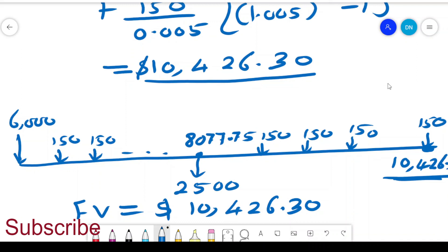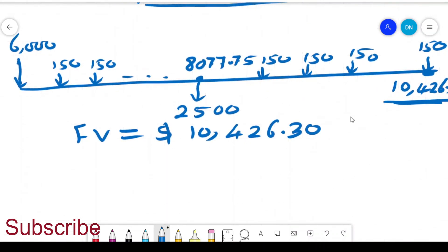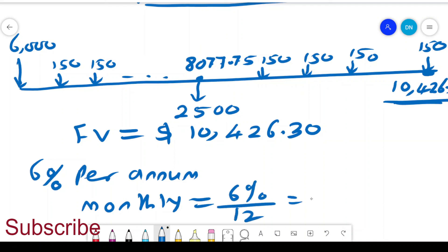The other part I didn't mention about is I was using 0.005. Remember, 6% is per annum. So monthly was equal to 6% divided by 12, or which is 6 over 1,200, which is 1 over 200. And 1 over 200 is 0.005. And that's the figure that I was using as the interest rate to be able to do that computation.